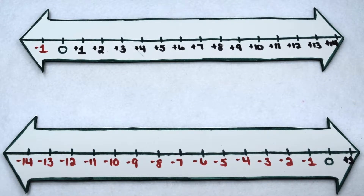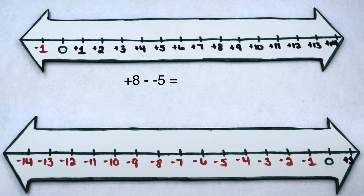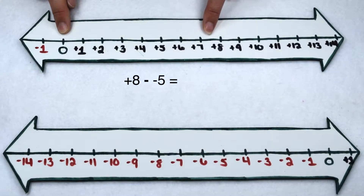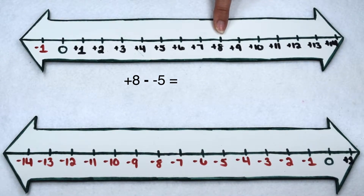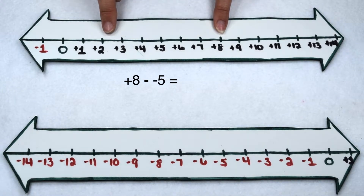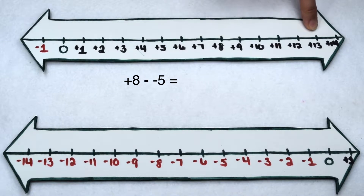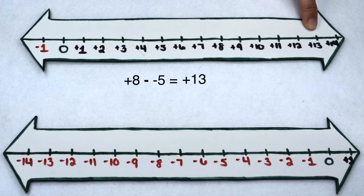But what about when we start mixing positive and negative values in our problem? To find out, let's start by illustrating positive 8 minus negative 5. We're going to start at 0, and positive 8 is going to send us 8 places to the right. Now we need to take away negative 5. Normally negative 5 would send us 5 places to the left, but we want to do the opposite of negative 5, which means we're going to continue on 5 places to the right — that sends me to positive 13. So positive 8 minus negative 5 gives me positive 13.